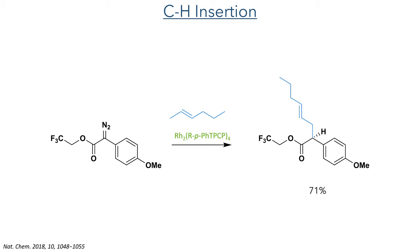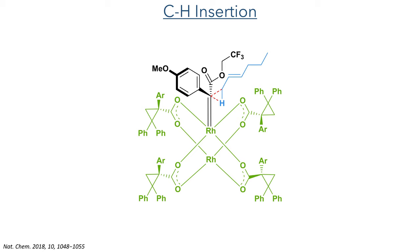The catalyst acts by bonding to the substrate upon the elimination of nitrogen gas, and the carbene that is formed can react with the allylic C–H bond, forming a transition state where the carbene interacts with both the terminal carbon and its hydrogen. This then forms a new carbon–carbon bond upon the elimination of the chiral rhodium catalyst.